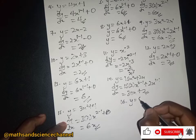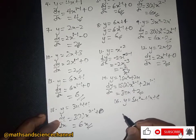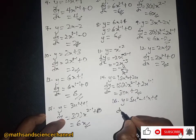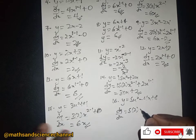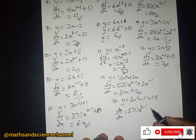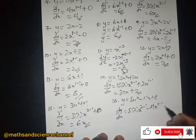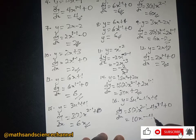Now: y equal to 5x squared minus 4x plus 8. The dy/dx will be — 5 multiplied by 2 then x to the power 2 minus 1, then for 4x: 1 minus 1, and we differentiate the constant to get zero — so we have 10x minus 4.